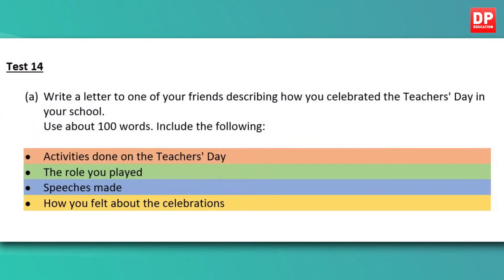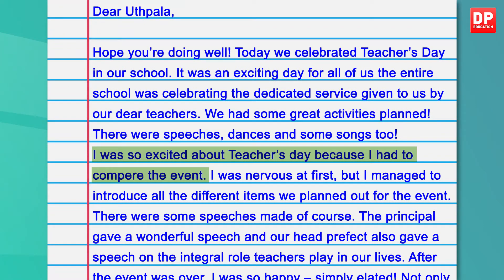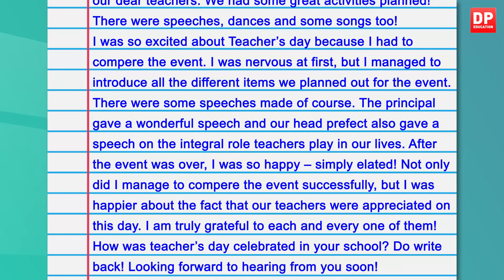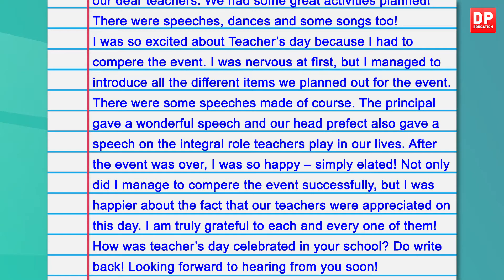You would have noticed I used all the guidelines. Under activities done: speeches, dances, and songs. Under the role I played: I stated I was the compere — the compere introduces the events and ensures the function runs smoothly on stage. The third guideline — speeches made — I mentioned the principal and the head prefect. The final bullet point — how you felt — I initially stated I was nervous and then later mentioned I was happy and elated.